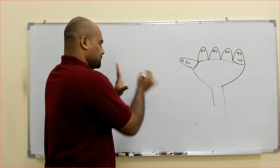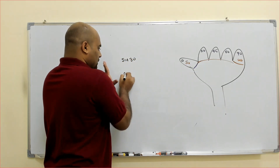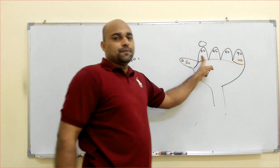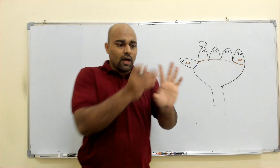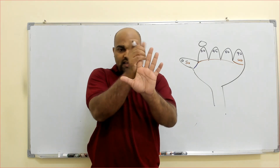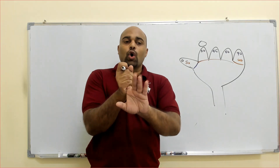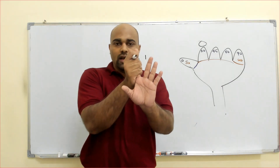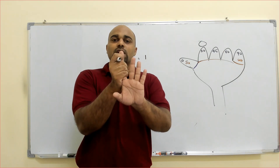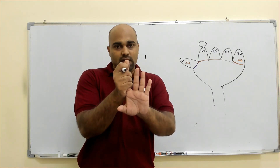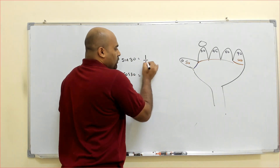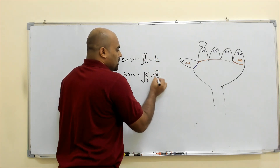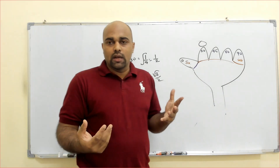For sin 30: hold the 30-degree finger down. On the sin side, how many fingers? One finger. On the cos side, three fingers. So sin 30 = √(1/4) = 1/2, and cos 30 = √(3/4) = √3/2. You always divide the finger count by 4 and take the square root.